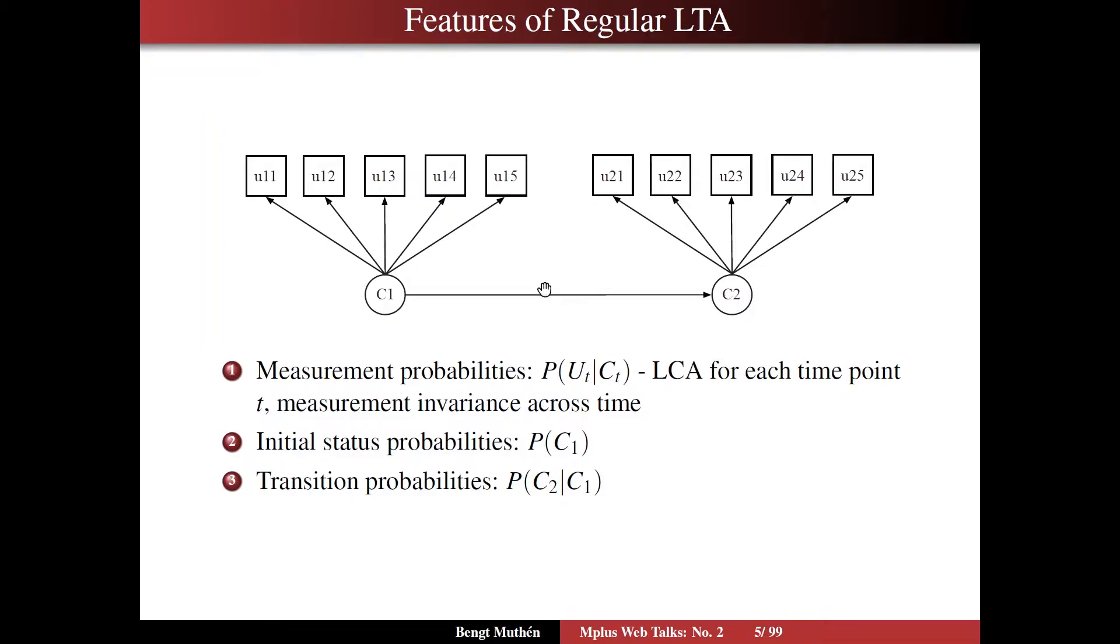We're going to consider three parts to this model: measurement part, initial status part, and a transition part. The measurement probabilities describe the relationship between the latent class variable and the indicators, the observed indicators. We're going to express that relationship in terms of probabilities, because these dependent variables are categorical binary. So we have an LCA, or latent class analysis, for each time point. We are going to assume, typically, that the measurement characteristics here are the same across time.